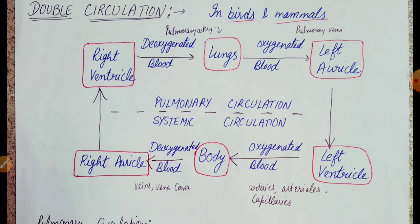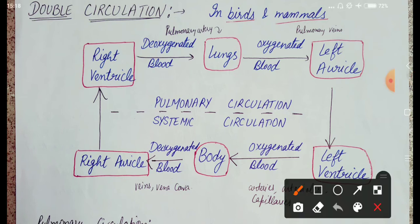Double circulation means two types of circulation. The first type is pulmonary circulation and the next one is systemic circulation.